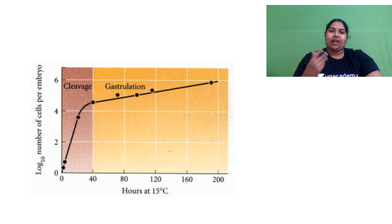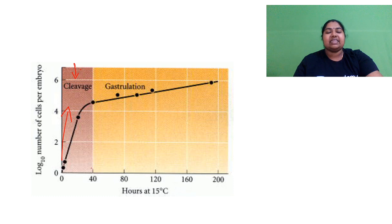So if you see this graph, you will know that during cleavage there is a rapid increase in the number of cells. During your cell cycle we have already seen that there are four major phases.